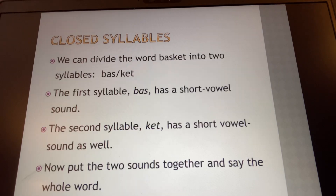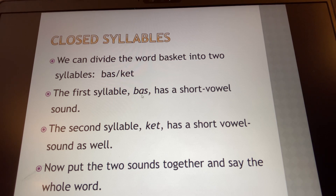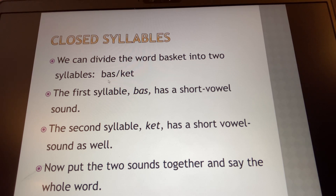Let's look at some closed syllables together. We can divide the word 'basket' into two syllables: 'bas' and 'ket.' Here's the syllable break. The first syllable, 'bas,' has a short vowel sound — the A says 'ah.' The second syllable, 'ket,' has a short vowel sound as well. There's nothing at the end after T to influence the 'eh' that we see here. Now put the two sounds together and say the whole word: basket. Nice work.